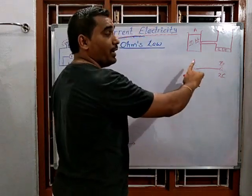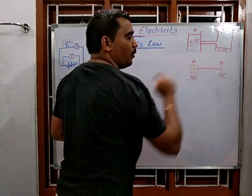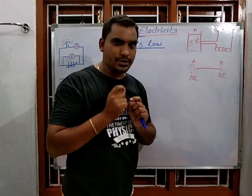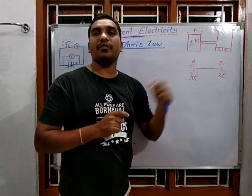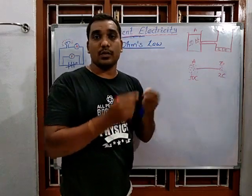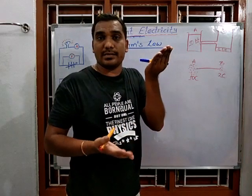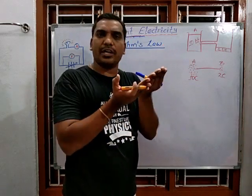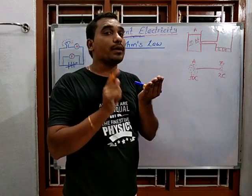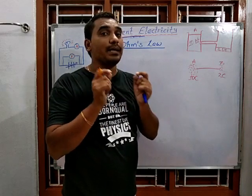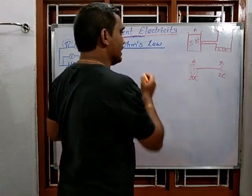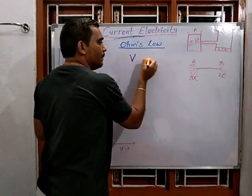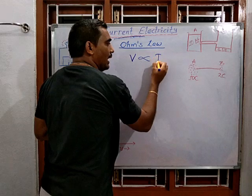In the same manner with charge, when the potential difference between two points is high, the electron flowing speed is also high. The current flowing between two points is directly proportional to the potential difference. So when there is more potential difference, flow of current will also be more; when there is less potential difference, flow of current will be less. Mathematically: V is proportional to I.